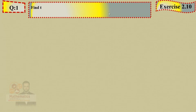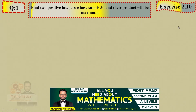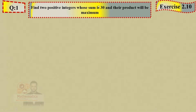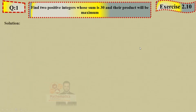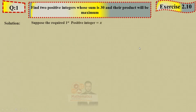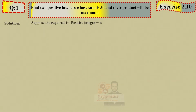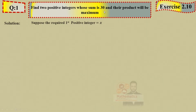Question 1: Find two positive integers whose sum is 30 and their product will be maximum. We need two positive integers — integers are whole numbers, you studied this in detail in First Year. We need positive integers whose sum is 30. Let's suppose: suppose the first required positive integer is x. The second one — normally the key book uses y, but another concept is: if one number is x, and sum is 30, then the second is 30 minus x.